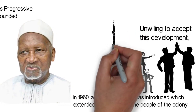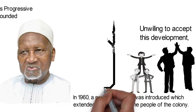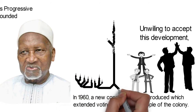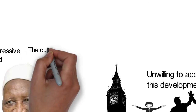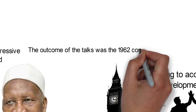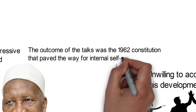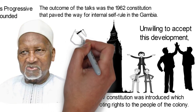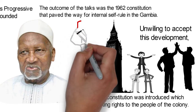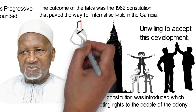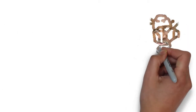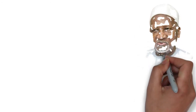This eventually led to a political crisis. The British colonial government had to assemble the various stakeholders for talks both in Bathurst and in London in 1961. The outcome of the talks was the 1962 constitution that paved the way for internal self-rule in the Gambia. A general election was held in May 1962 and Jawara's People's Progressive Party emerged victorious, winning 17 out of the 25 protectorate seats. This result gave Jawara the absolute majority in the parliament, so Jawara became the new premier of the Gambia.